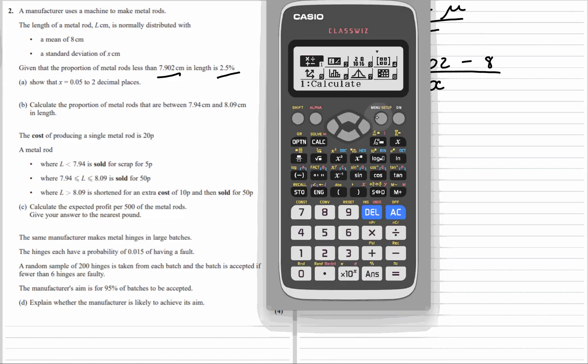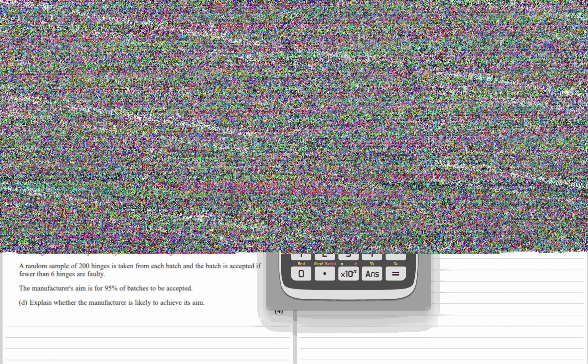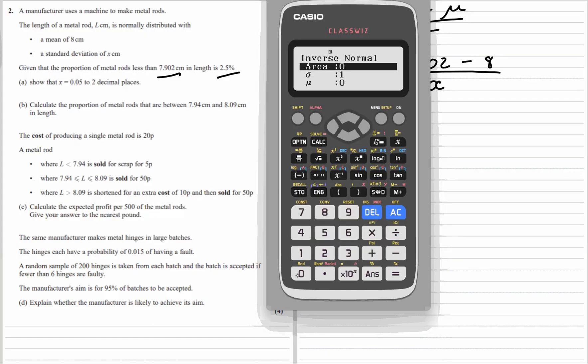If we grab the calculator, go to our distribution, and use the inverse normal, we have the area is 2.5%, so the decimal is 0.025. The standard deviation is 1, the mean is 0, click through that, and z is negative 1.96.